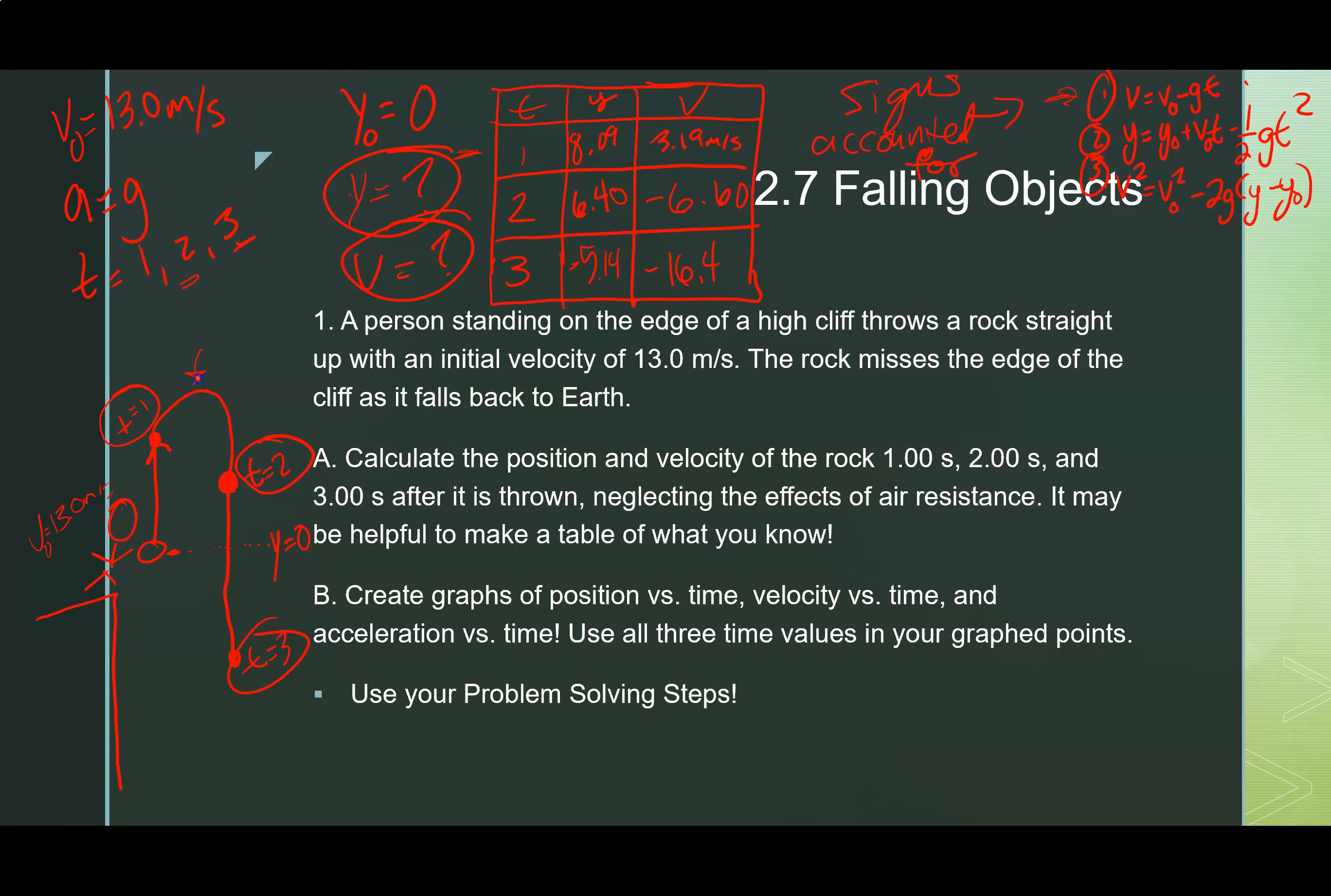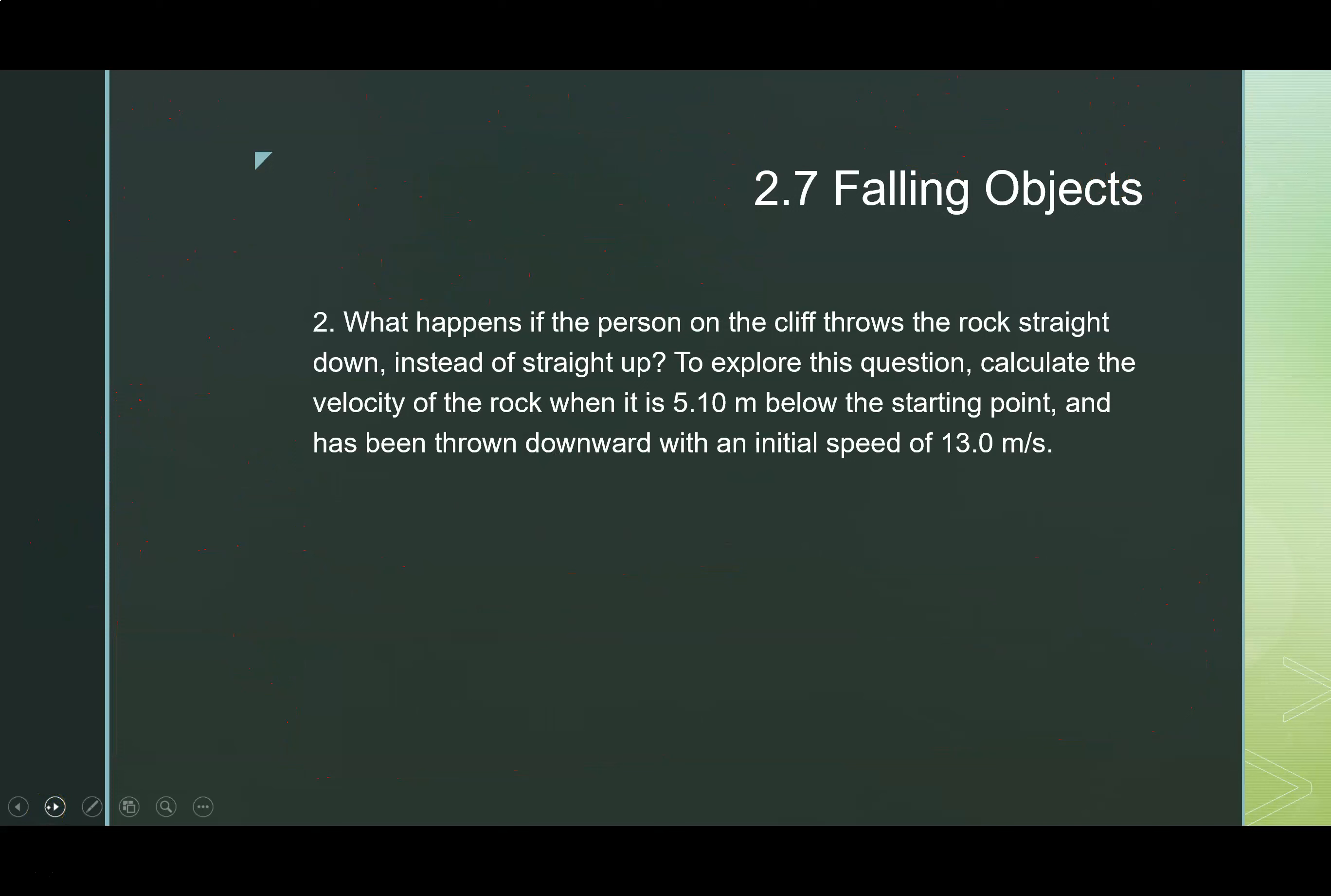Then you'll notice that at time two, our velocity has now turned negative. What we've done is we've moved over the period where velocity is zero, which is at the top of the path of movement, and now we're moving back downward. At our final time point, both our velocity is negative, and it's gotten more negative, and our position is now below our initial horizontal axis that we defined as zero. The next thing to do is to create some position time, velocity time, and acceleration time graphs. I'm going to let you do this on your own. I'd like to see this in the notes that you turn in with this lecture video.